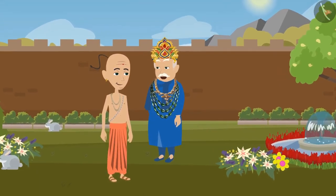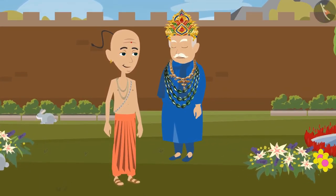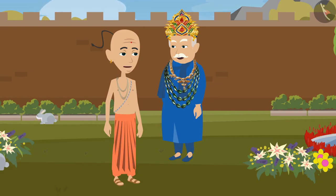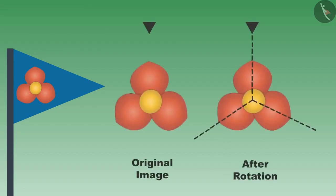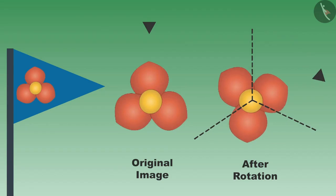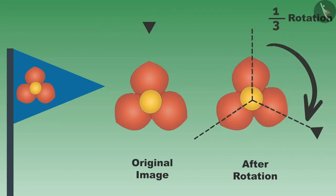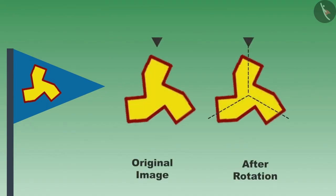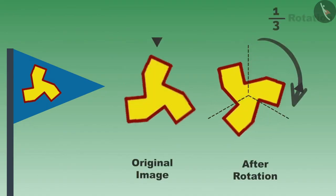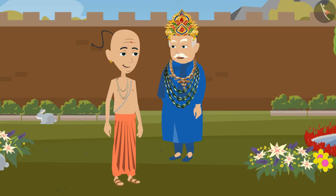Ramaji, you have solved the puzzle of locks with your wisdom. Can you name some more objects that will remain the same even after one-third rotation? Yes, my lord, there are many objects and shapes like this. For example, look at the image on the flag — this image will remain the same even after rotating it by one-third. Similarly, look at the other flag also — this image too will remain the same after rotating it one-third.